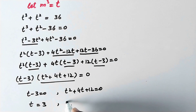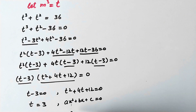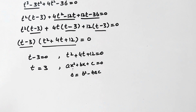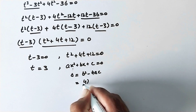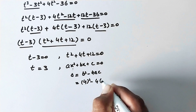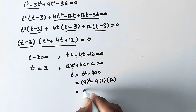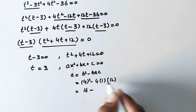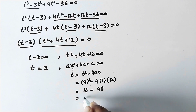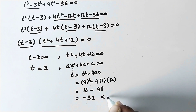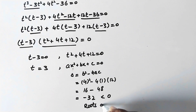For the quadratic equation t squared plus 4t plus 12 equals 0, using the discriminant formula b squared minus 4ac: b squared is 4 squared equals 16, minus 4 times 1 times 12 equals 48, giving 16 minus 48 equals minus 32, which is less than 0. So the roots are complex.